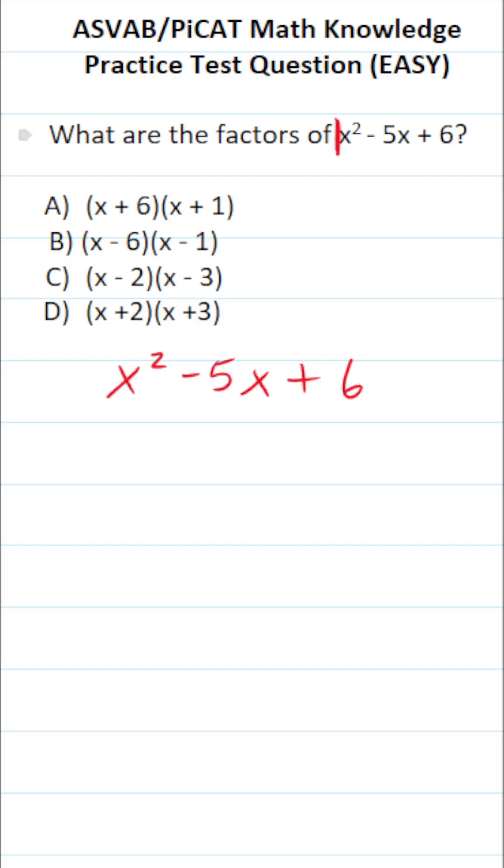Since this has a leading coefficient of 1 here, the 1's not expressed, we know that if we can factor it, it's going to look like this: x times x in parentheses.